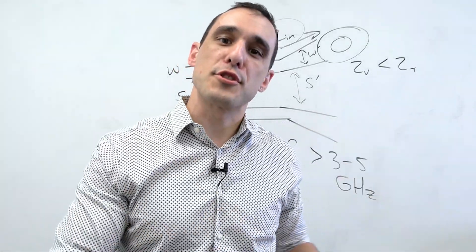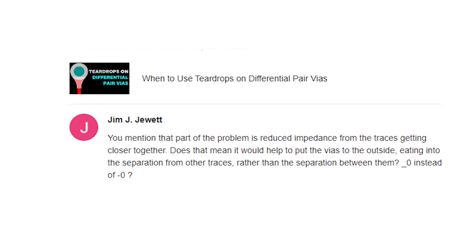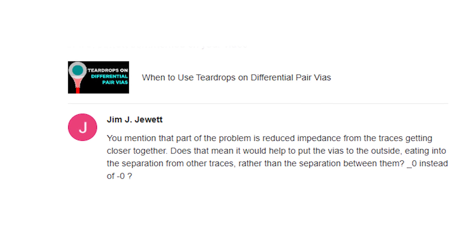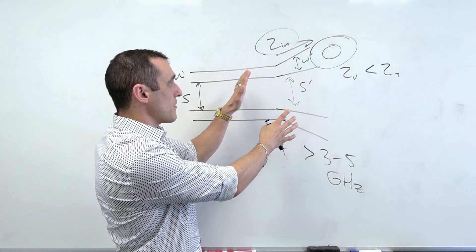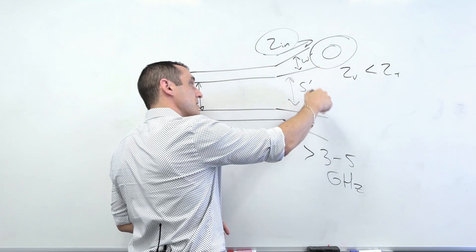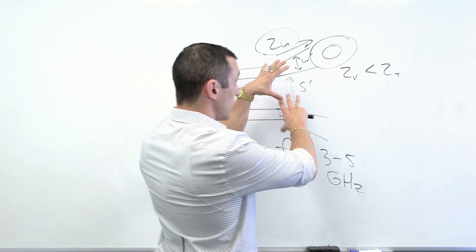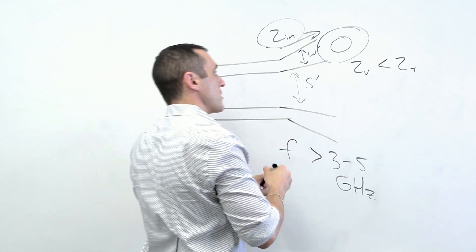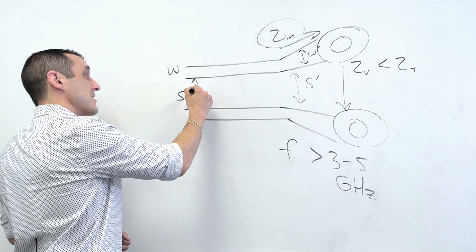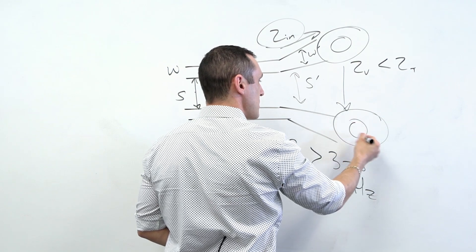Our last question comes from our other super fan, Jim Jewett. Jim writes: you mentioned that part of the problem is reduced impedance from the traces getting closer together. Does that mean it would help to put the vias to the outside — eating into the separation from other traces rather than the separation between them? That is a great question. That kind of breakout is something I often do. If you want to prevent that impedance reduction coming into this differential pair of vias, then yes, you would want to break them out like that. However, you could leave them and just route straight in — what you actually do depends on the spacing you have between these two vias and what spacing you need.